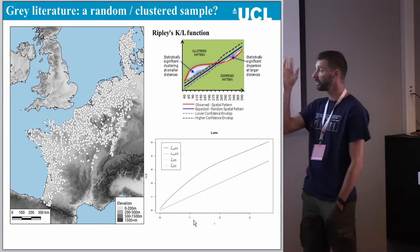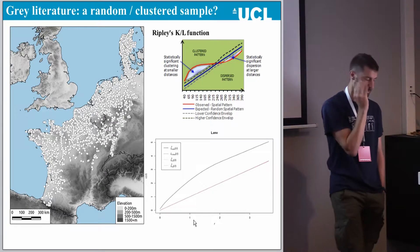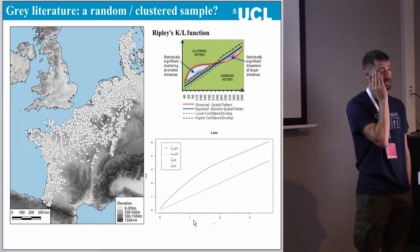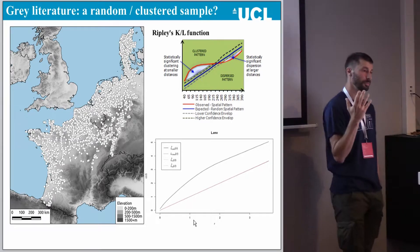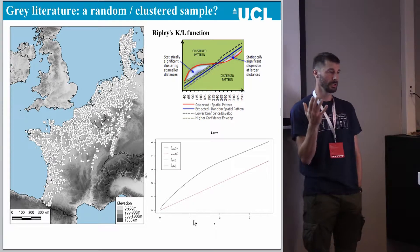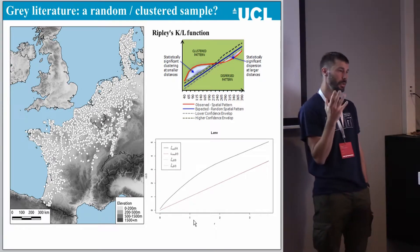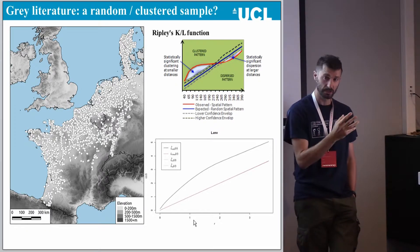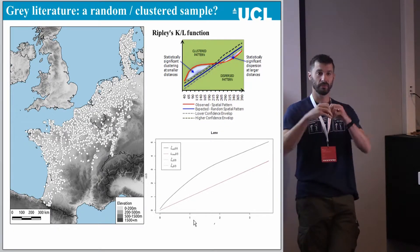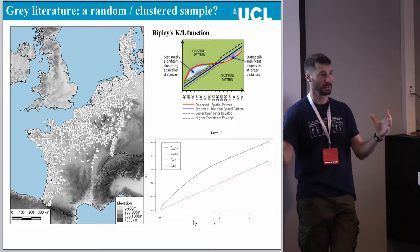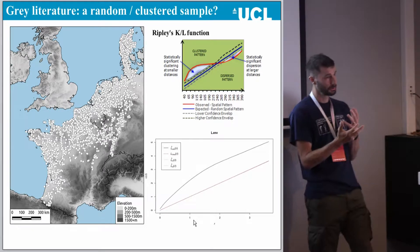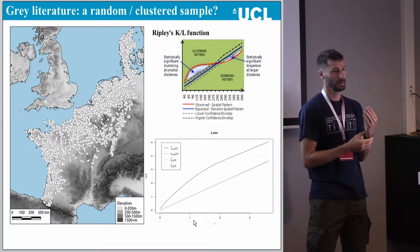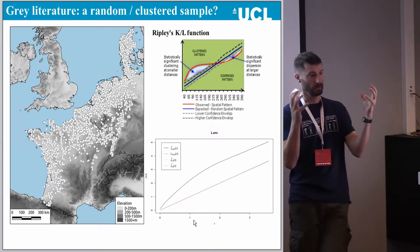We can use something called Ripley's K function, or a slightly different version called Ripley's L function. The idea of a Ripley function is to check whether a distribution of points is clustered or spread compared to random noise, so you can see whether sites have a tendency to aggregate.